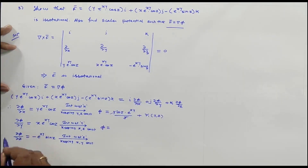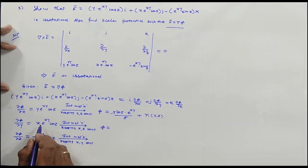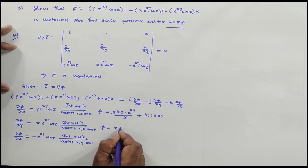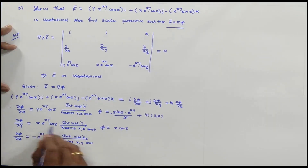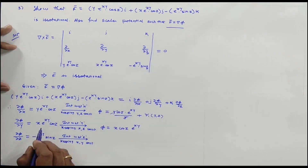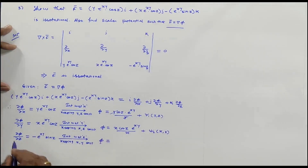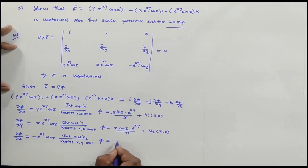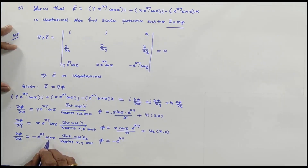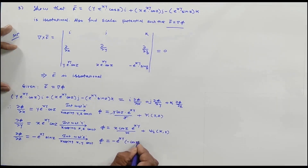Integrating ∂φ/∂y = xe^(xy)cosZ with respect to y (keeping x and z constant): x and cosZ are constants, integration of e^(xy) with y variable gives e^(xy)/x — coefficient of y is x in the denominator — giving e^(xy)cosZ + ψ₂(x,z). Integrating ∂φ/∂z = -e^(xy)sinZ with respect to z (keeping x and y constant): e^(xy) is constant, integration of sinZ is -cosZ, giving e^(xy)cosZ + ψ₃(x,y).